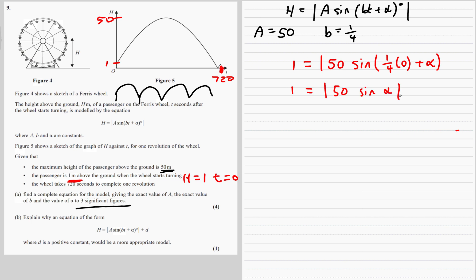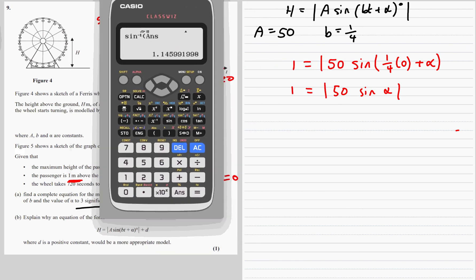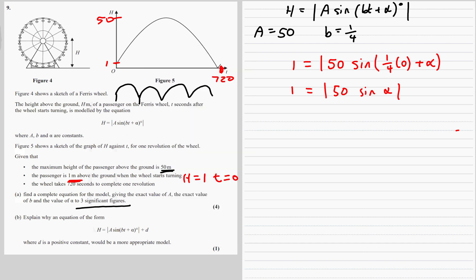We want to find alpha, so divide by 50 and shift sine. One fiftieth, shift sine, the answer, and I've got 1.14. Three significant figures, 1.15. Alpha is shift sine one fiftieth, and that's 1.15.